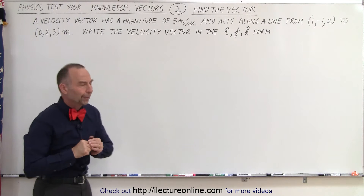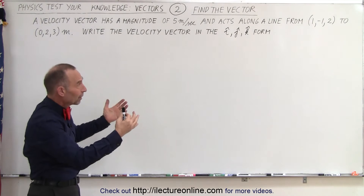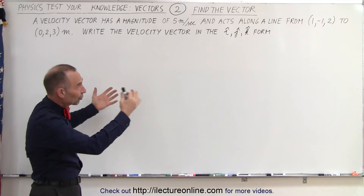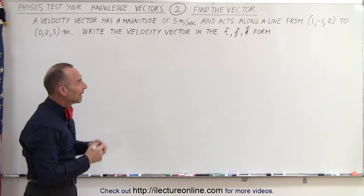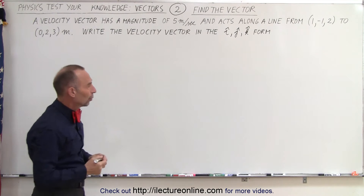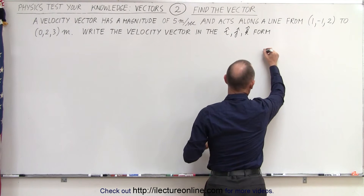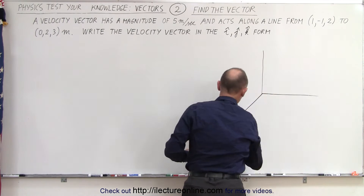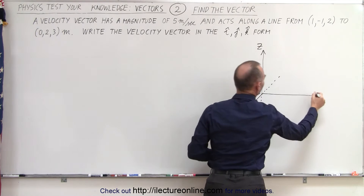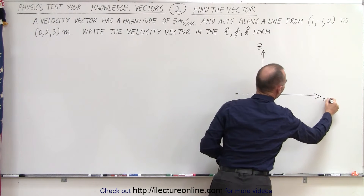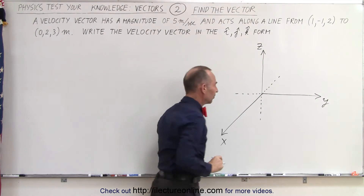So how do we do that? Well, we start out by drawing a picture of what's going on. We're going to find the two points in the x, y, z coordinate system, so let's draw one of those first. Here's our z axis, our y axis, and our x axis.